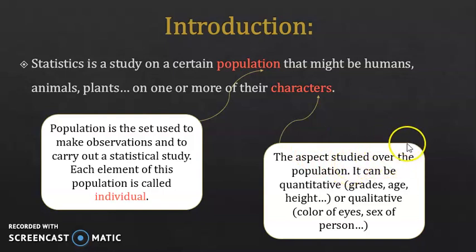So, what you are studying — you might be studying the grades of a certain class, the age of a certain population, color of eyes, sex of a person. All these are called characters.